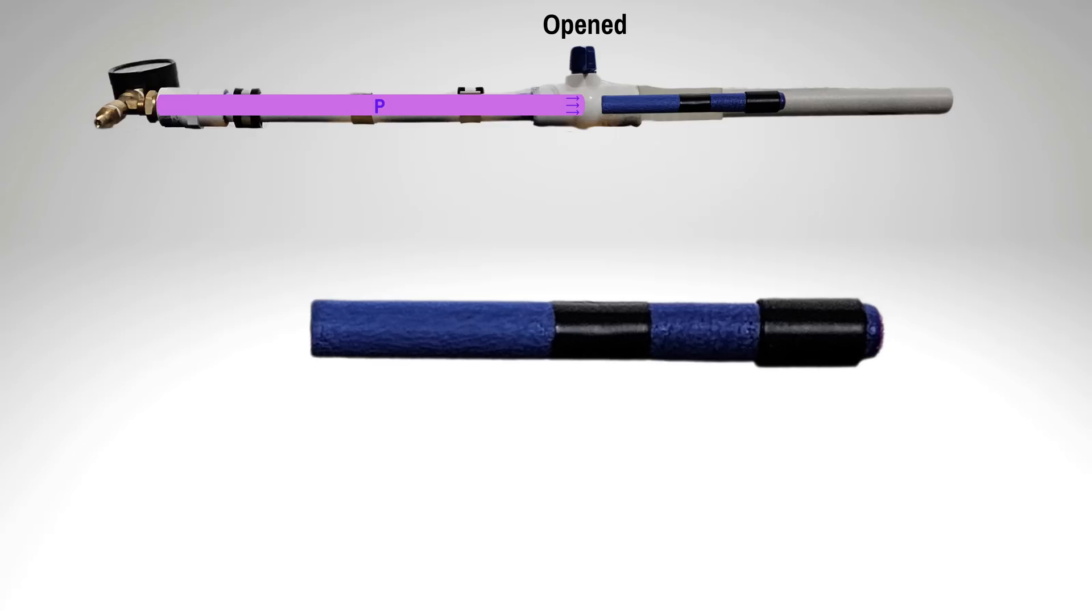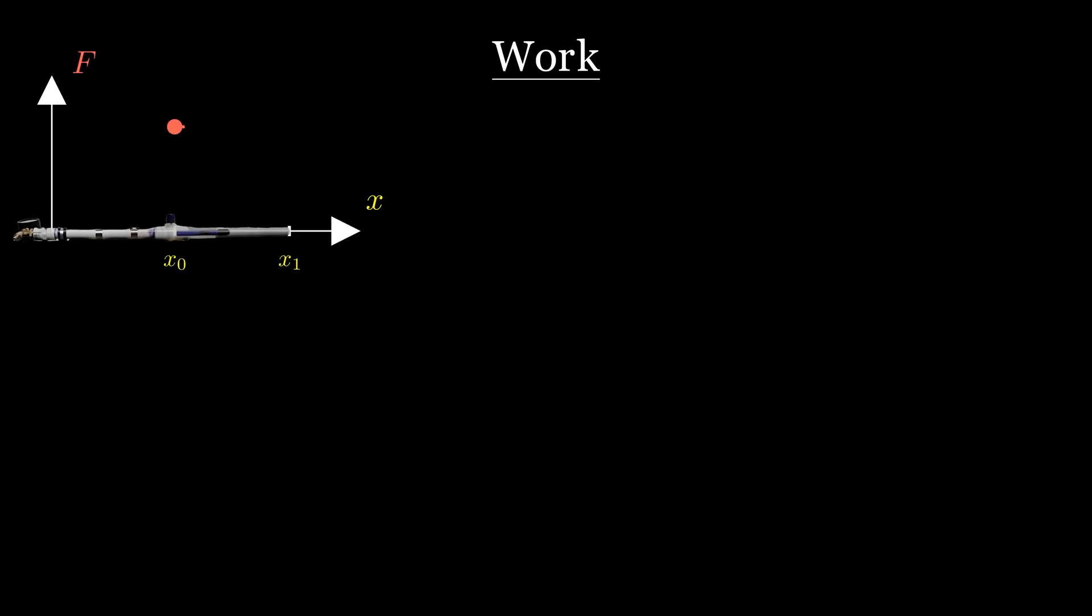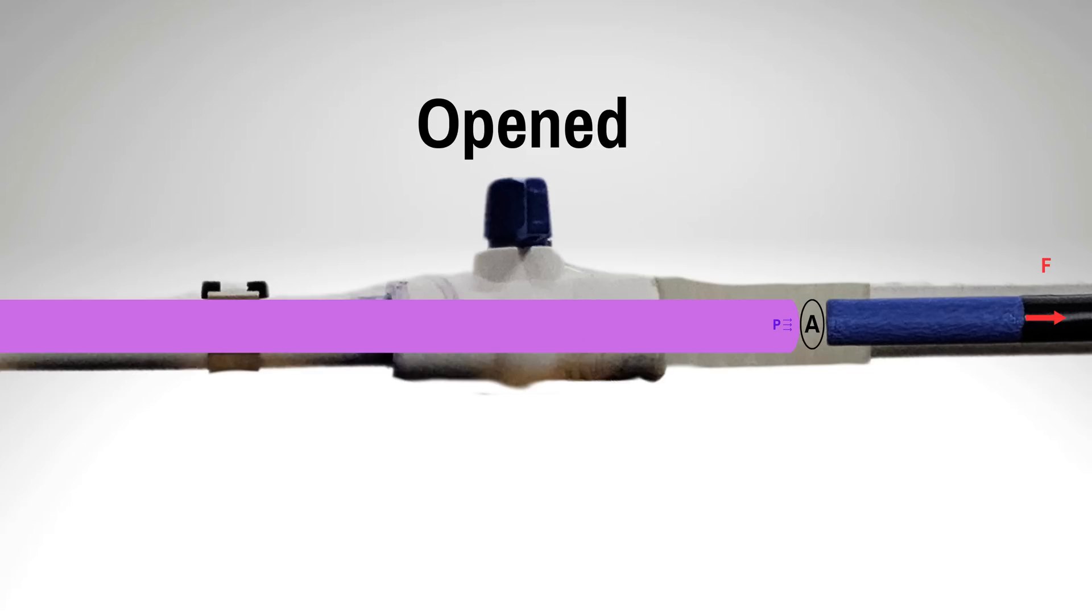When the valve is open, the compressed air will rapidly expand and as it does, the air pressure will act on the cross-sectional area of the dart, resulting in a force that will accelerate the dart until it exits the barrel. If this force was a constant, it would look like this graphically and I could calculate the work done on the dart simply by multiplying that force times the change in distance, which is the area under this curve. Unfortunately, it's not so simple, since the pressure and therefore the force is highest at the start and then decreases as the air expands.